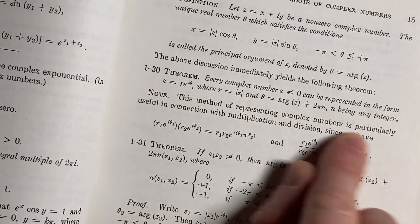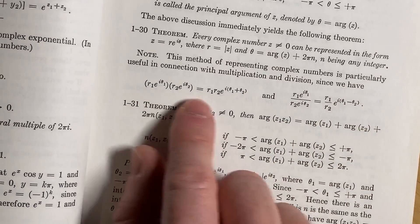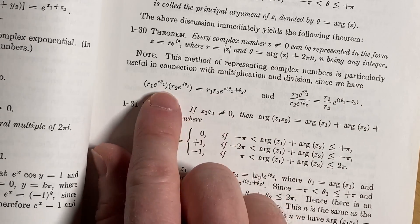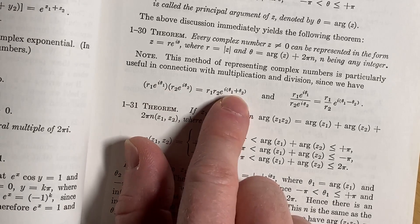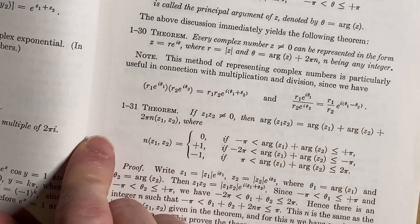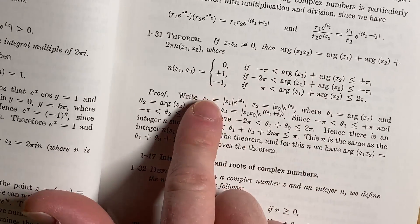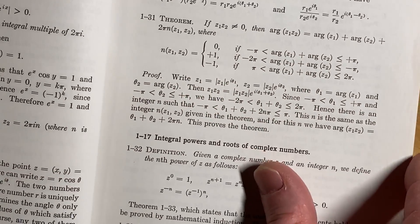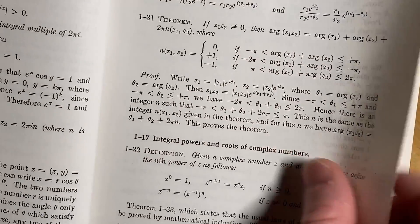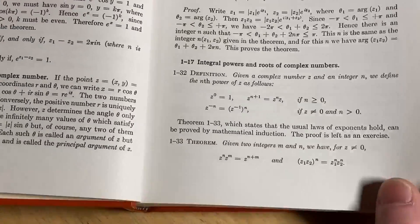This method of representing complex numbers is particularly useful in connection with multiplication and division. Yes, since we have these properties here. Yeah, look how convenient that is, right? Properties of exponents say you just add the arguments. And then properties of exponents say you subtract, and it works perfectly. And then you have a theorem here and a proof. This is a little bit more.